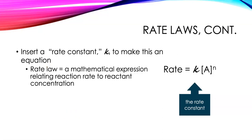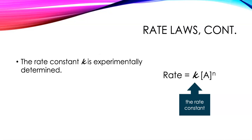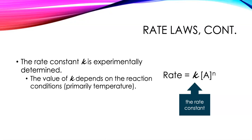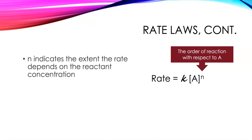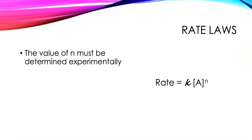This is what we call a rate law — a mathematical expression that relates reaction rate to reactant concentration. We've got our proportionality constant k, the rate constant, and the concentration of A raised to some power n. We have to find the value of the rate constant from experimental data, and the value of k really depends on the reaction conditions — the biggest thing that affects k is temperature. n is referred to as the order of reaction with respect to A, and the value of n has to be experimentally determined. You cannot figure it out any other way — you have to do experiments, and one way to do that is the method of initial rates, which is the focus of this webcast.